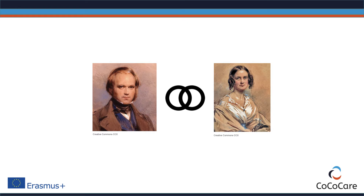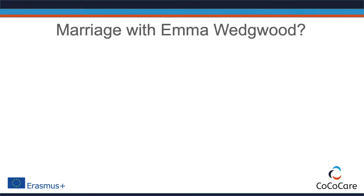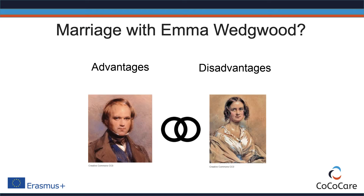Nevertheless, he was plagued by doubt. And so, Charles Darwin did what many of us do — he drew a list of advantages and disadvantages. In his case, he drew a list of advantages and disadvantages of getting married.